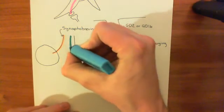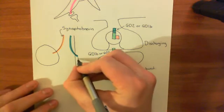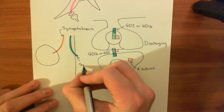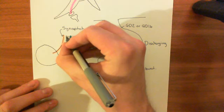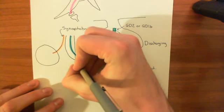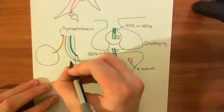Here is syntaxin 1. And then finally, you have SNAP-25 here. So this is SNAP-25.